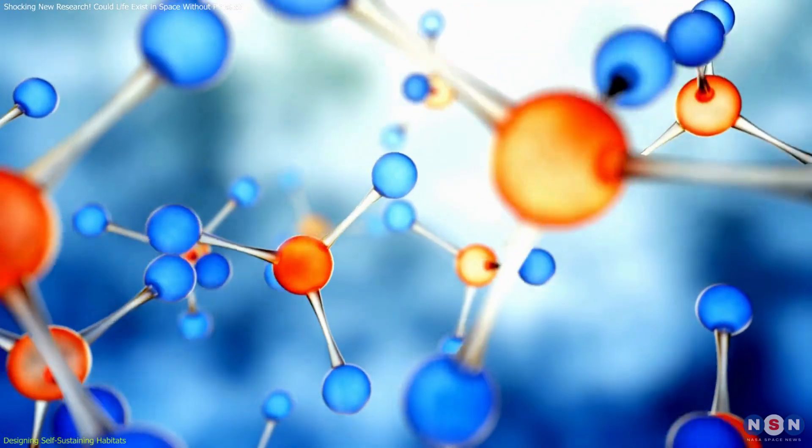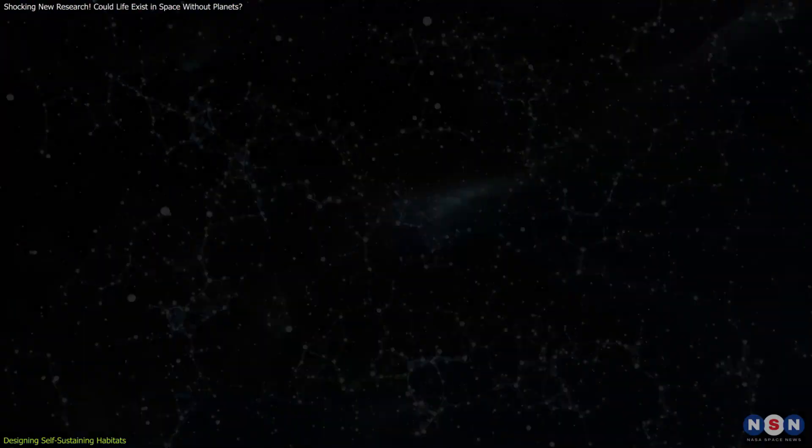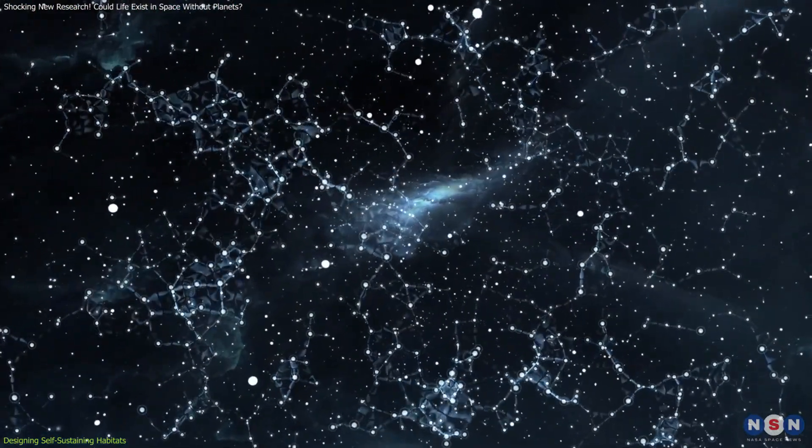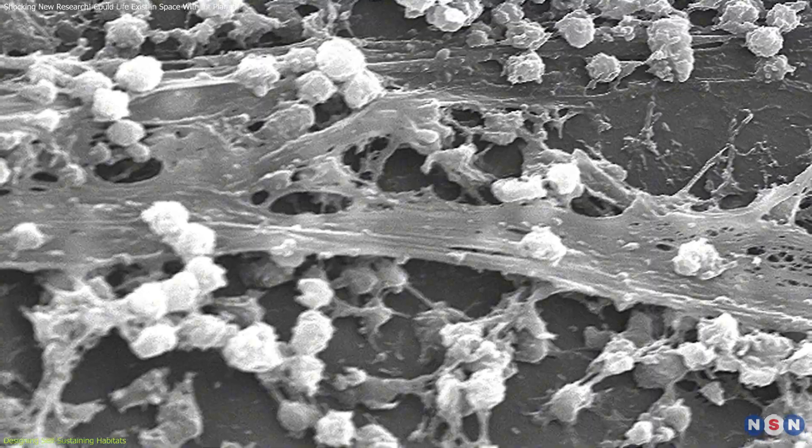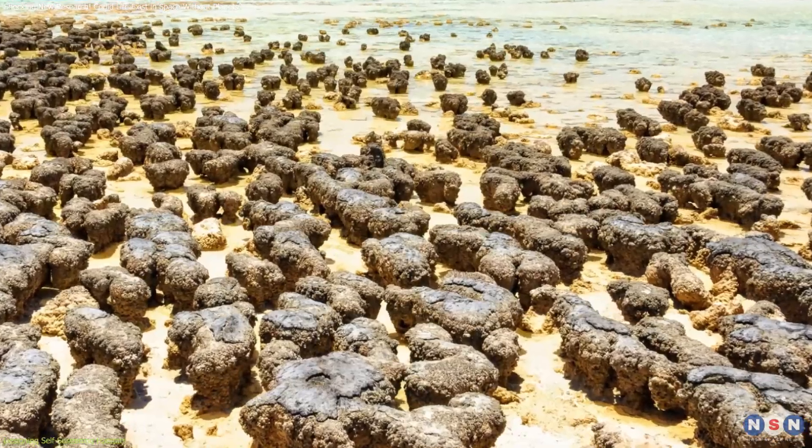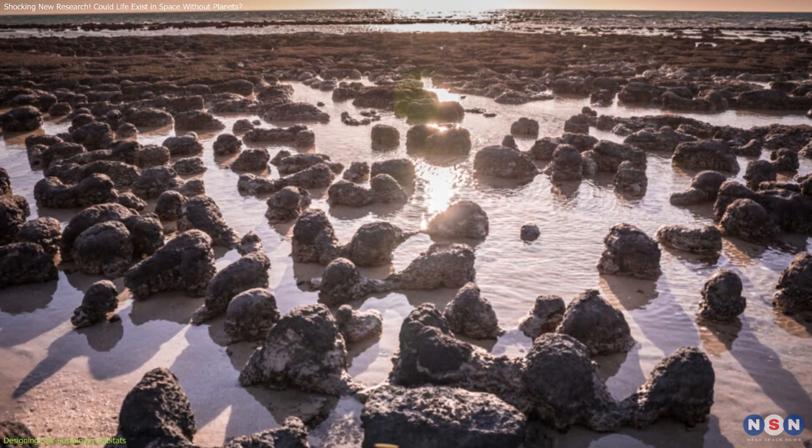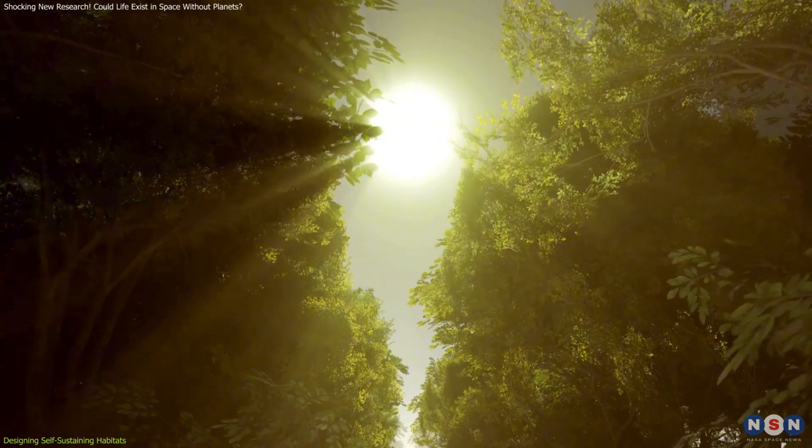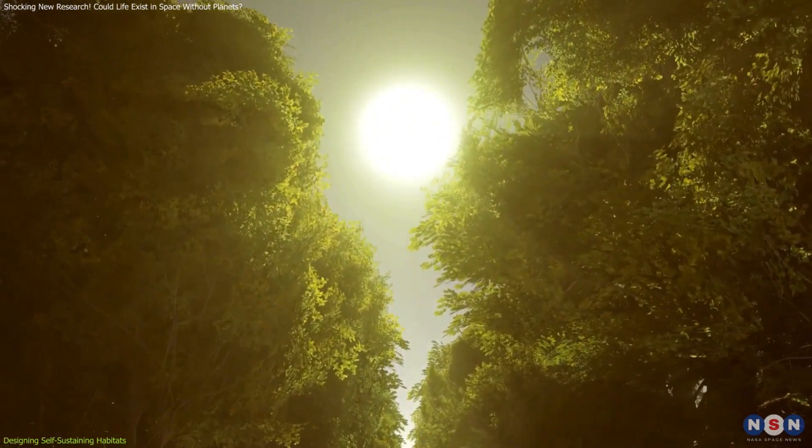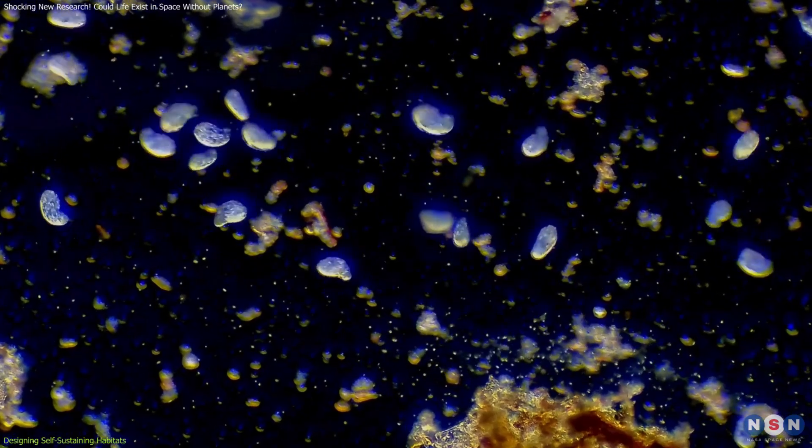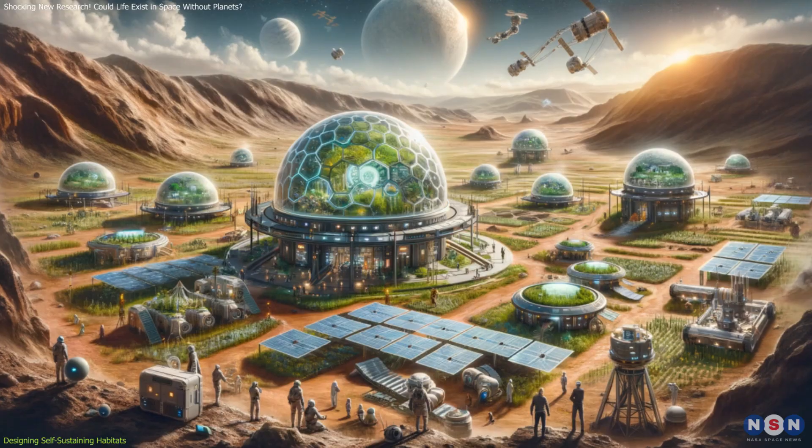Preventing the loss of volatile compounds, such as water vapor, is equally vital. The vacuum of space creates a constant gradient that draws volatile molecules away. Biofilms and stromatolites on Earth demonstrate how microbial communities retain essential compounds while allowing necessary processes like photosynthesis to continue.